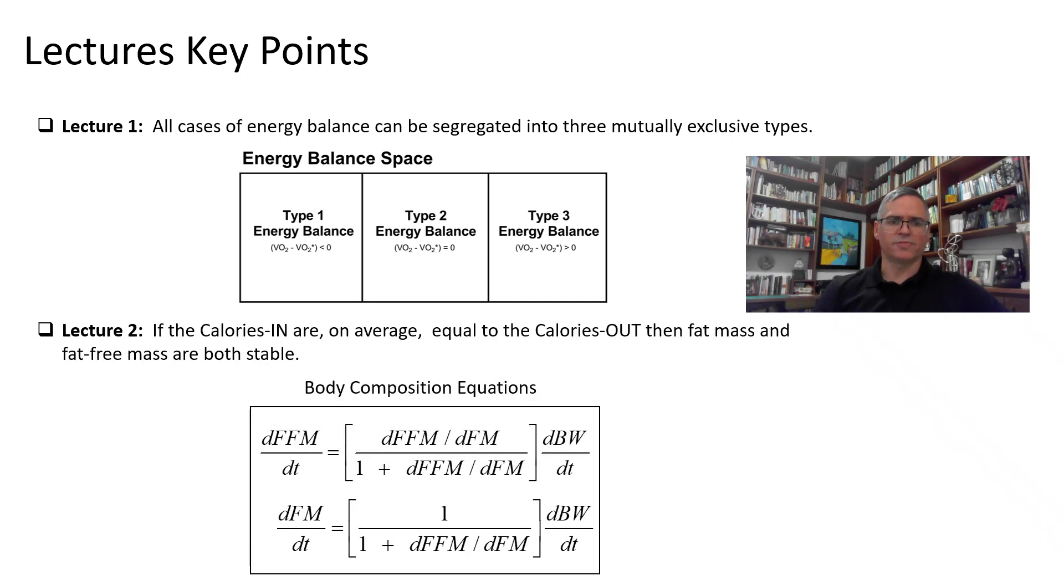In the present lecture, we have learned about the body composition equations, which indicate that during prolonged weight stability, body composition is also stable. Consequently, if the calories in are on average equal to the calories out, then fat mass and fat-free mass are both stable.